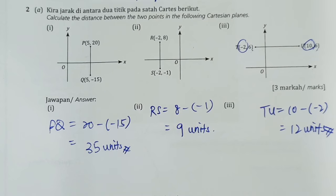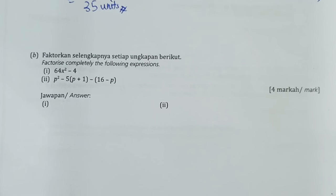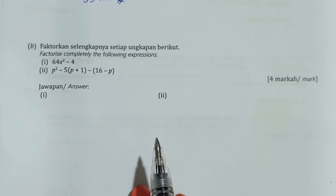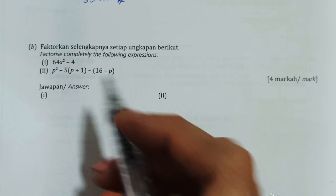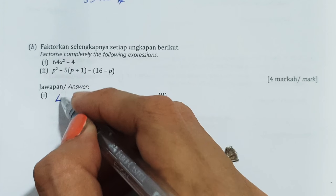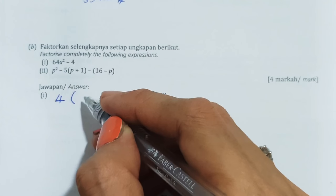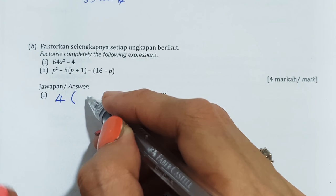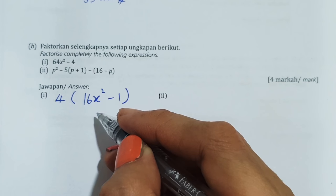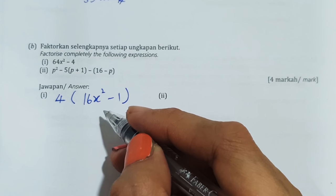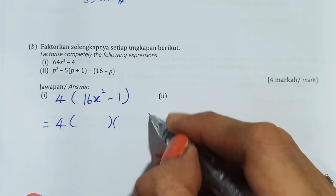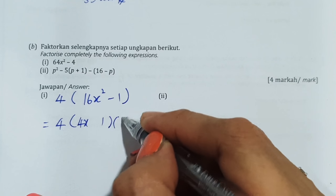Next, factorize completely. Normally we factorize the common factor first. 64 and 4 are both multiples of 4, so we take 4 out. That leaves 16x² and 1. Now 16x² minus 1 is a difference between two perfect squares, so we can further factorize it by taking the bases: 4x and 1.